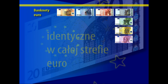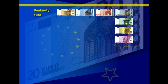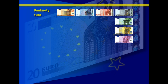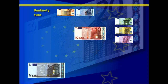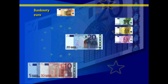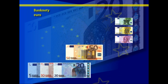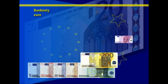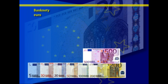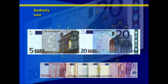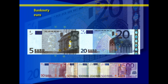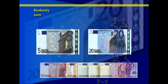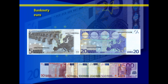W warstwie ilustracyjnej banknoty euro przedstawiają pewne symbole, style architektoniczne różnych epok: antyk, styl romański, gotyk, renaissance, barok i rococo, architekturę XIX i XX wieku. Na awersie, czyli przedniej stronie banknotów, przedstawione są okna i bramy, które symbolizują otwartość i współpracę.